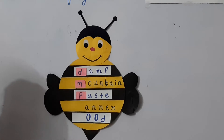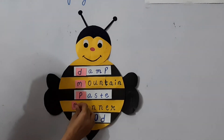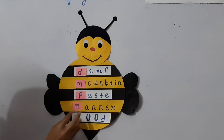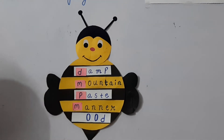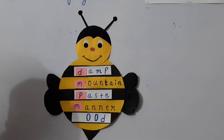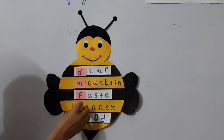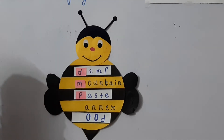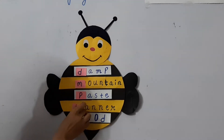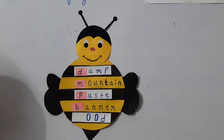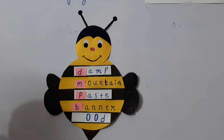The next one — if I add M, what will it become? M-A-N-N-E-R, manner. And if I add B, what will it become? B-A-N-N-E-R, banner. Manner and banner.